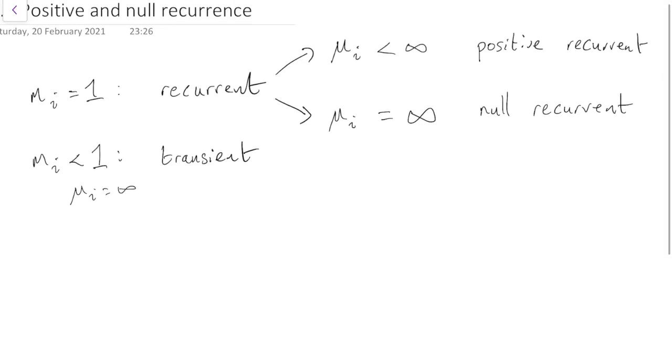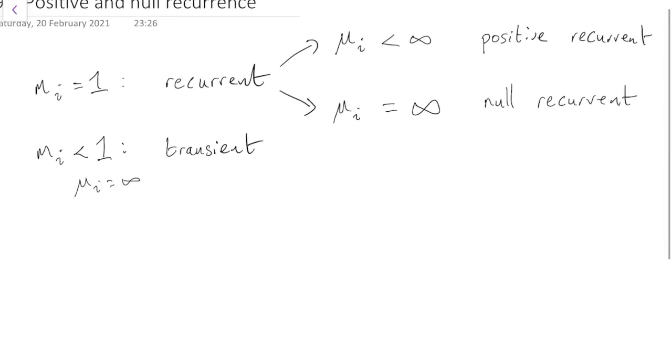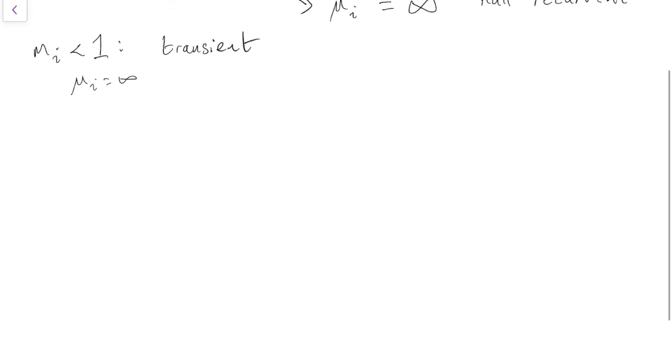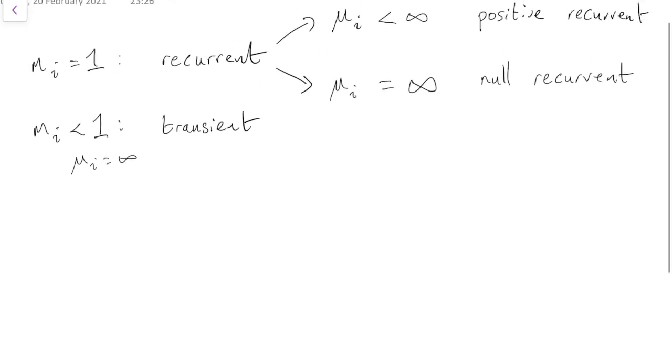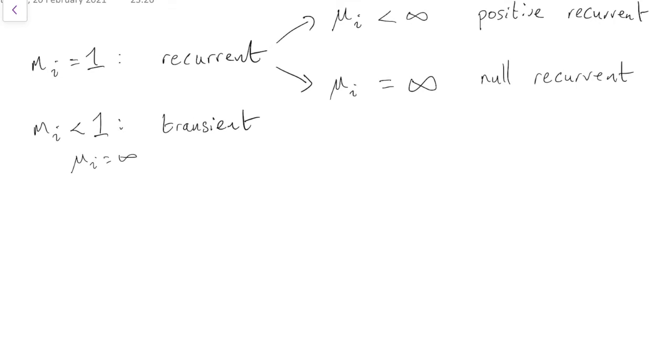In the same way as we prove some things about recurrent and transient states, we can also prove similar things about null recurrent and positive recurrent cases. I'm not actually going to bother to write them out as theorems and proofs this time, because they're almost exactly the same as before. You can try them out for yourself if you really want.